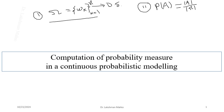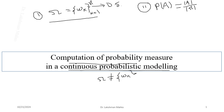Now what happens in the scenario of continuous probabilistic modeling — how will we compute a probability measure? Here also uniform and non-uniform laws will come, but the sample space is no more a discrete state. That means we fail to write the sample space in terms of a single sequence.